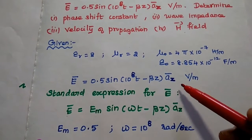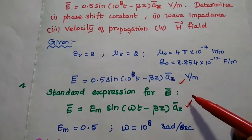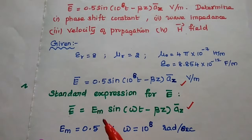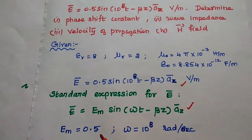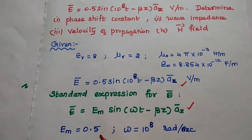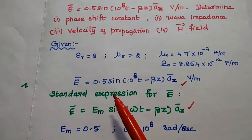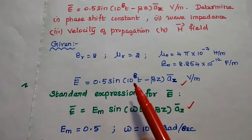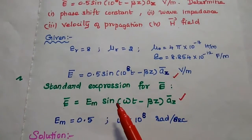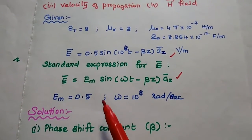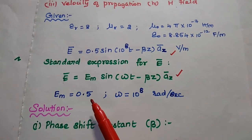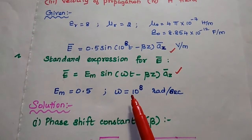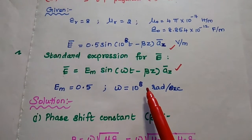By comparing the given electric field expression with the standard expression, we can extract: Em equals 0.5 (the peak value of electric field magnitude), and omega equals 10⁸ rad/s.